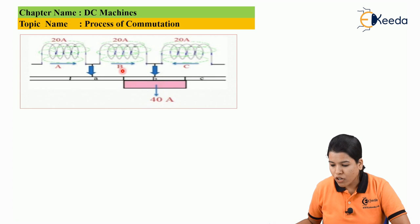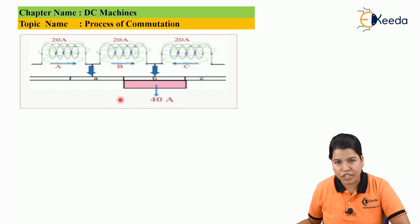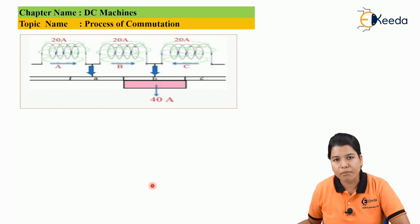Here, coil B has just started the process of commutation, so coil B is about to get short-circuited by the brush.